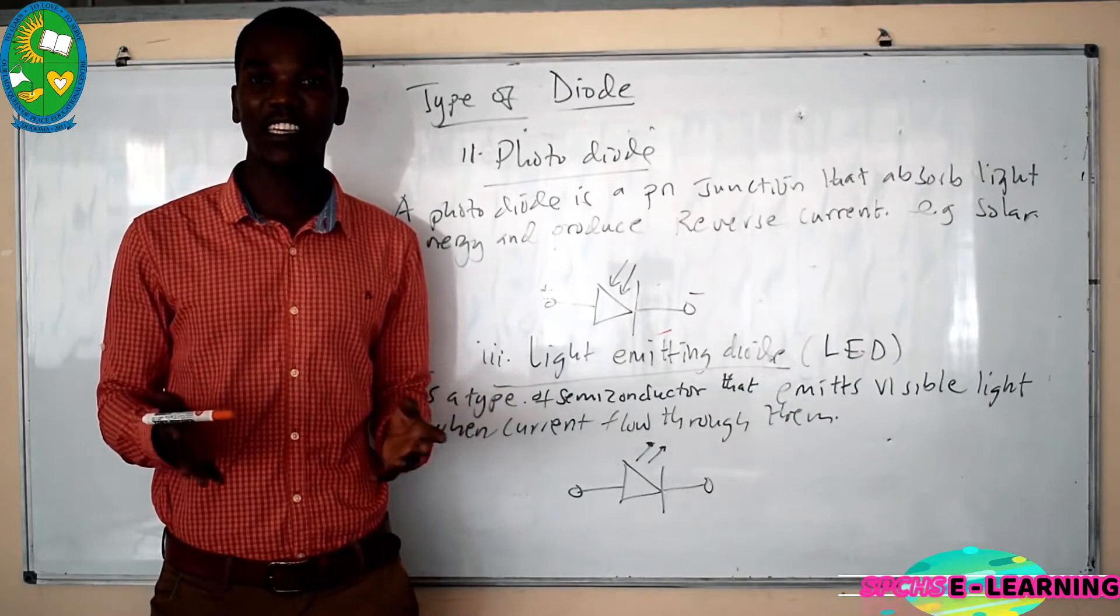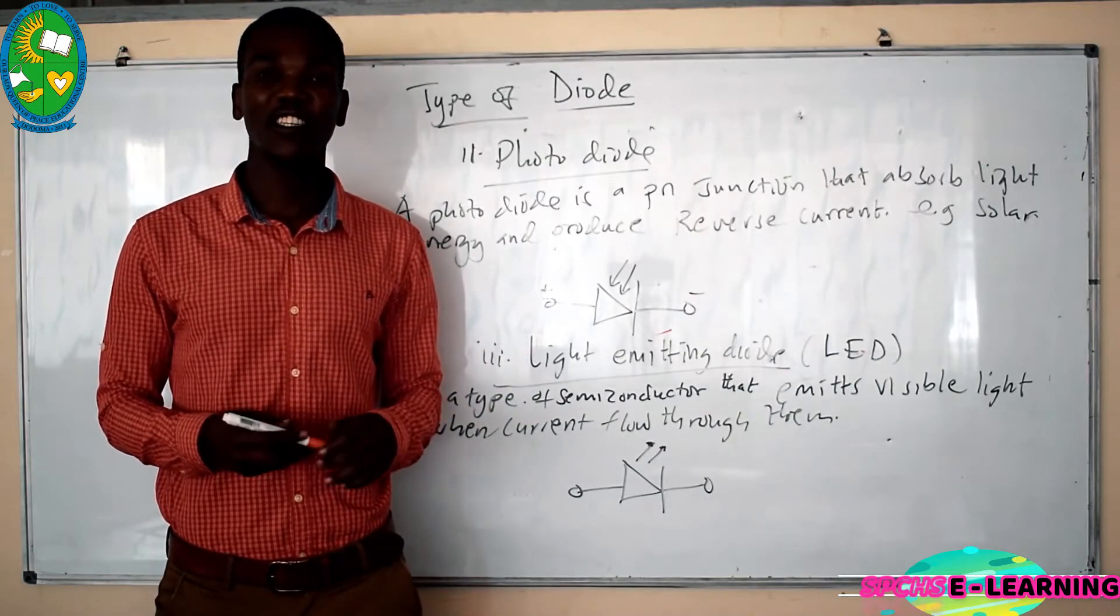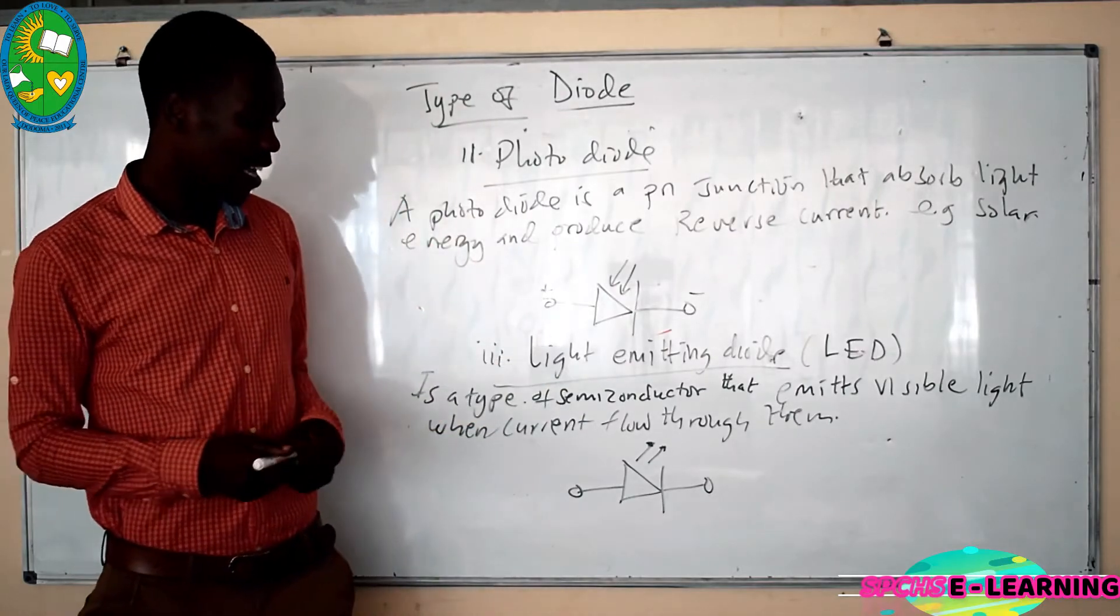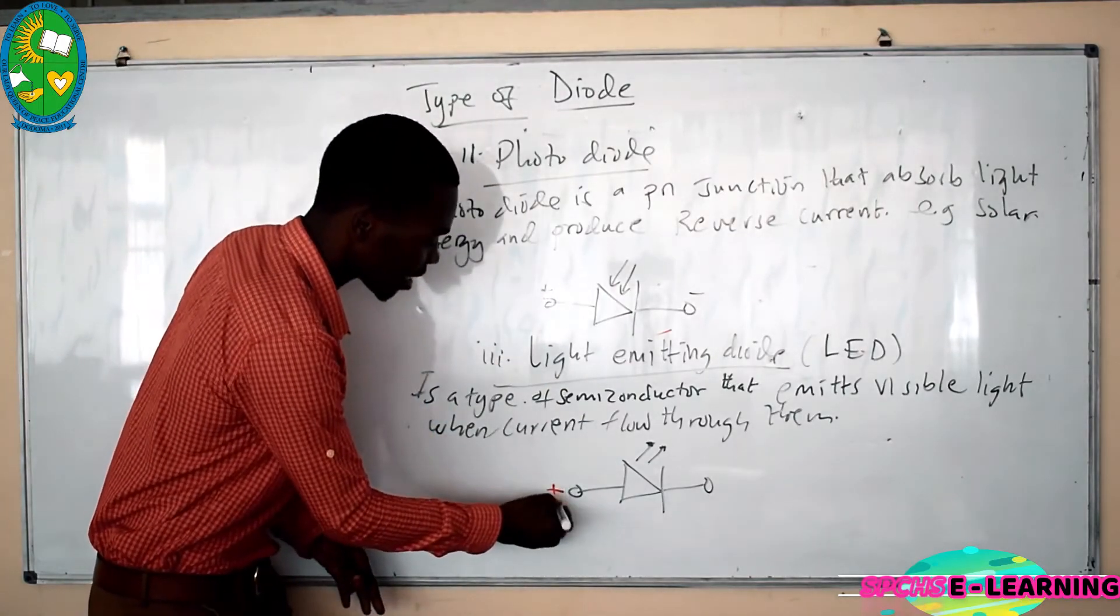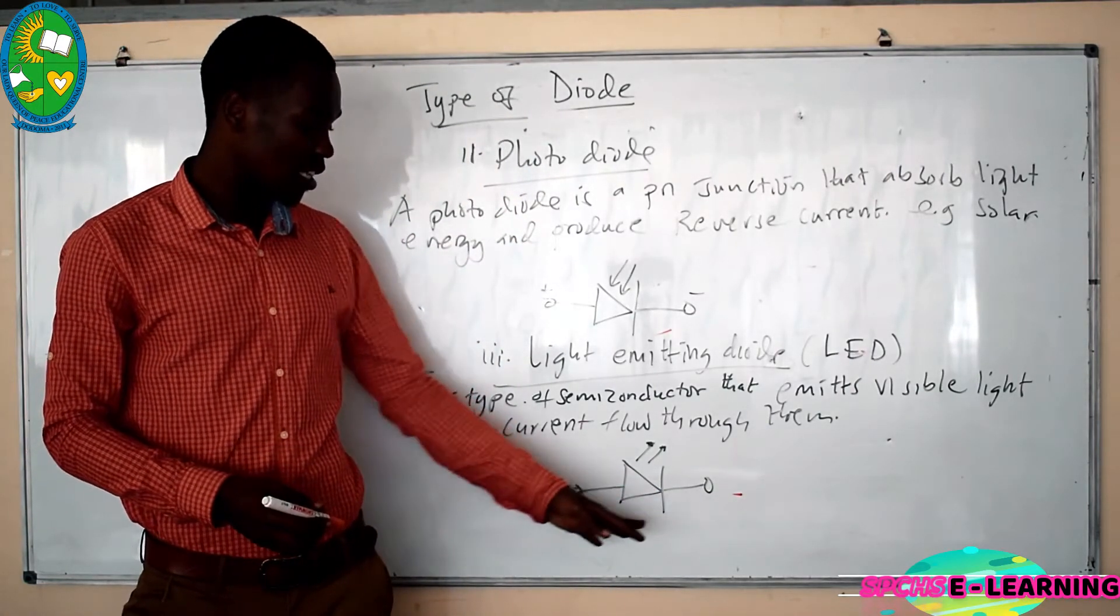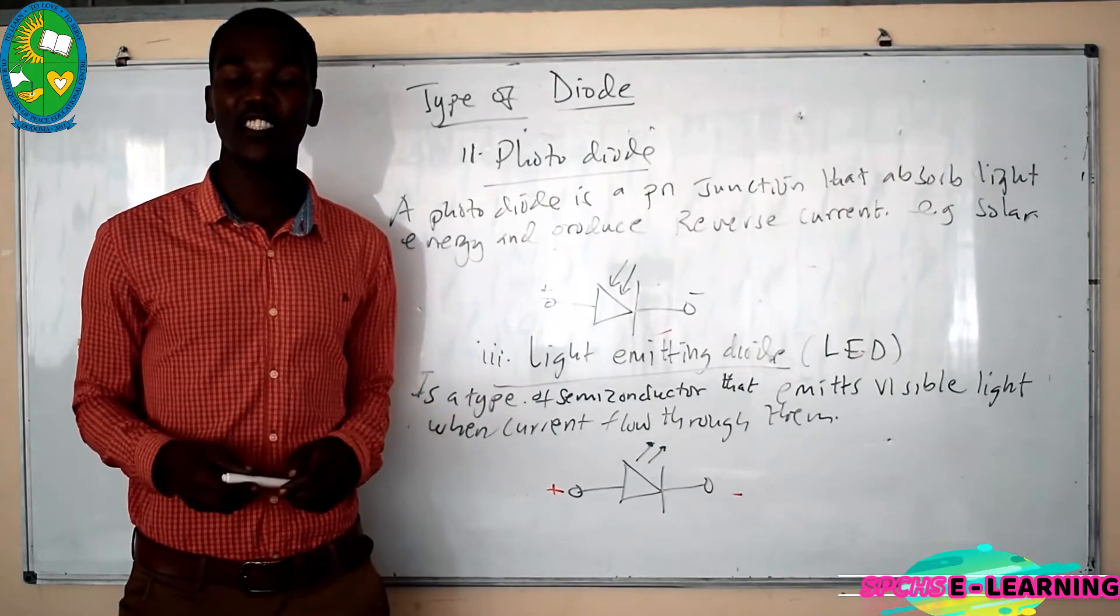They are used in making televisions. They are used in making low consumption lights. So these are LEDs and its symbol is just like this. This side is positive and this side is negative. So when you connect it in a forward bias it will emit visible light.